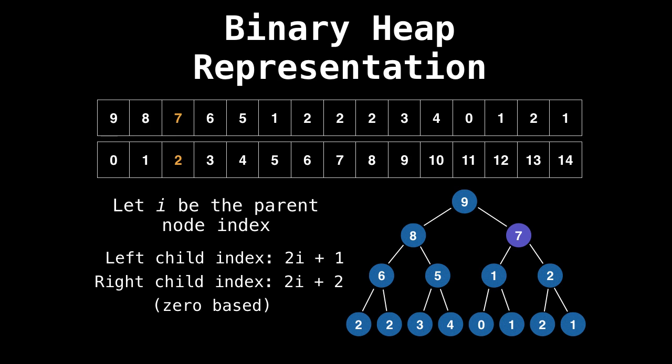So suppose we have node seven, which is highlighted in purple. Well, its index is two. So by our formula, the left child of seven should be located at 2 times 2 plus 1, or five. And if we look at index five, we expect to get one. And if we look at the right child, we should expect to get 2 times 2 plus 2, or six. If we look in our array, this gives us the value of two.